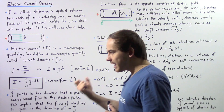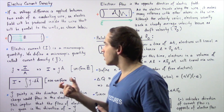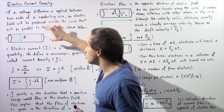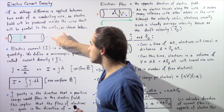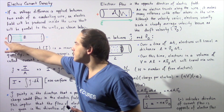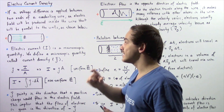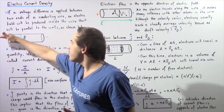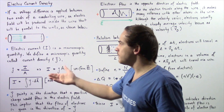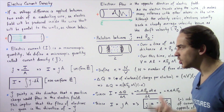Now because electrons have a negative charge, electrons will travel beginning at our lower potential, the negative end, and ending at our higher potential, the positive end. So electrons essentially travel in the opposite direction of the electric field, and in the opposite direction of the electric current.